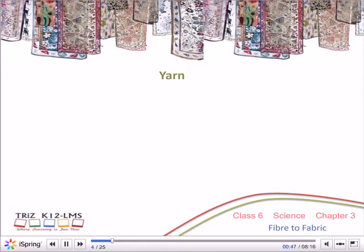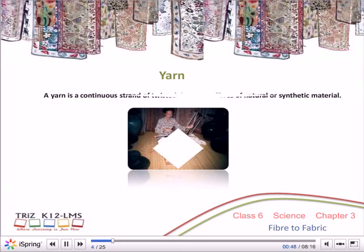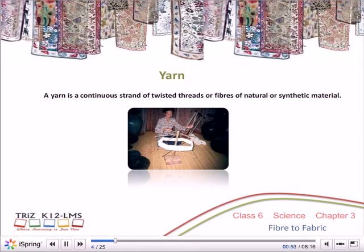A yarn is a continuous strand of twisted threads or fibres of natural or synthetic material.